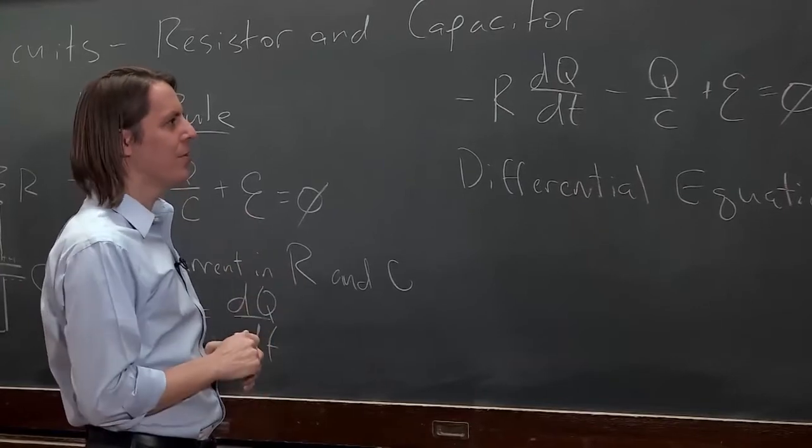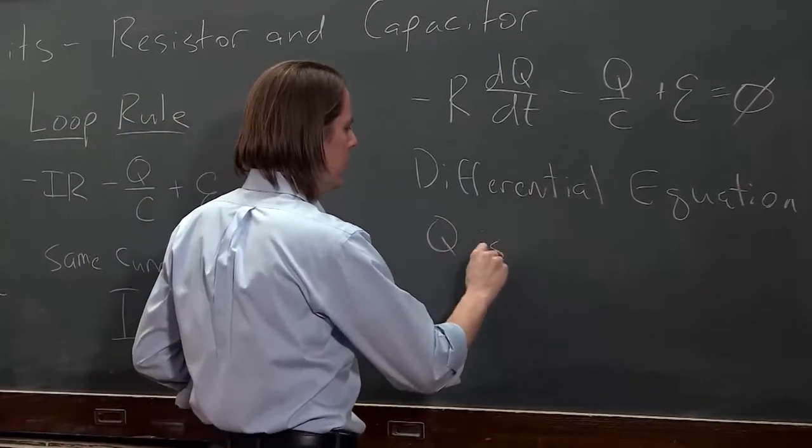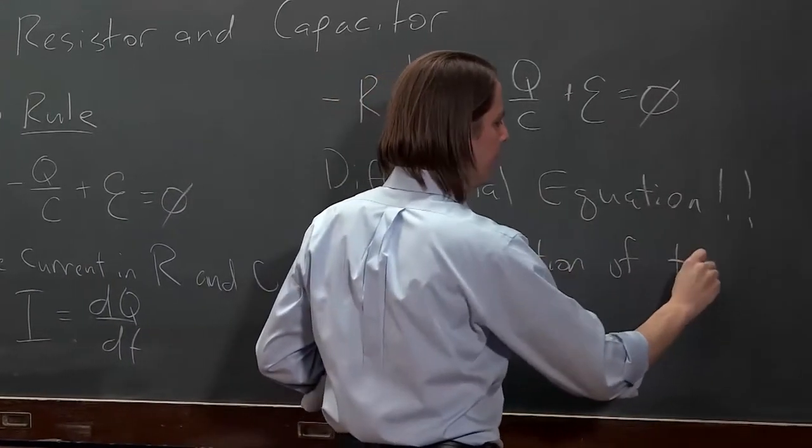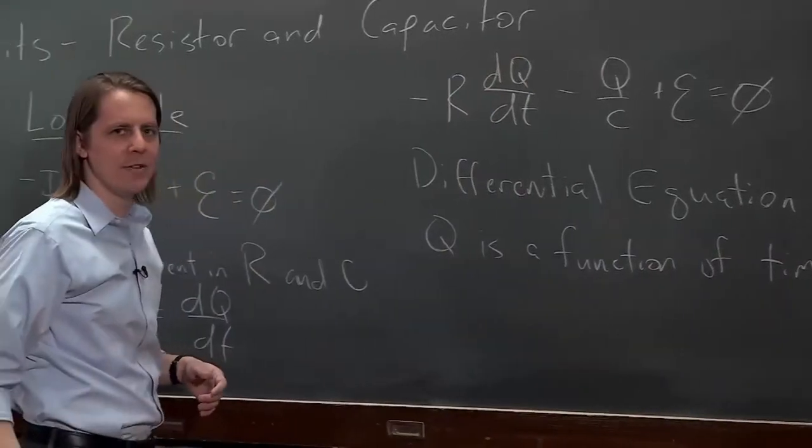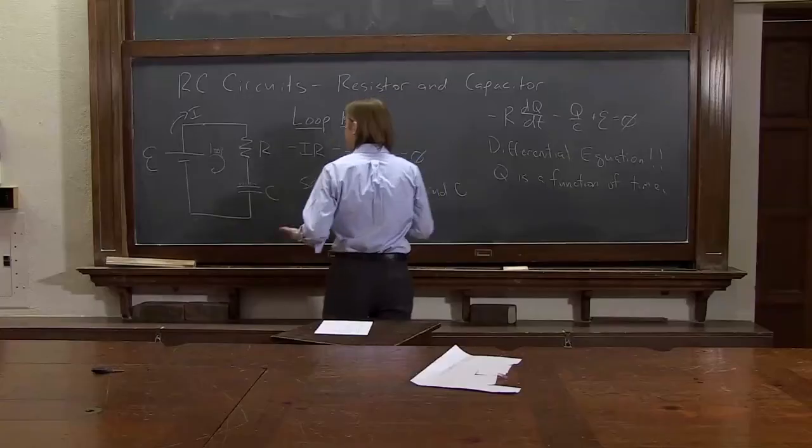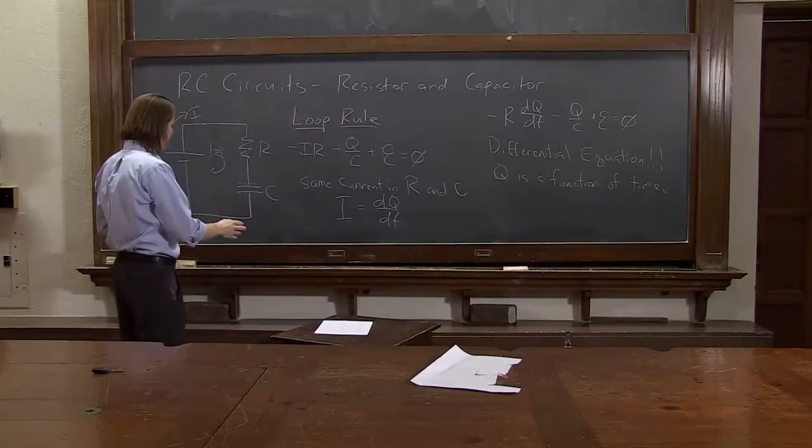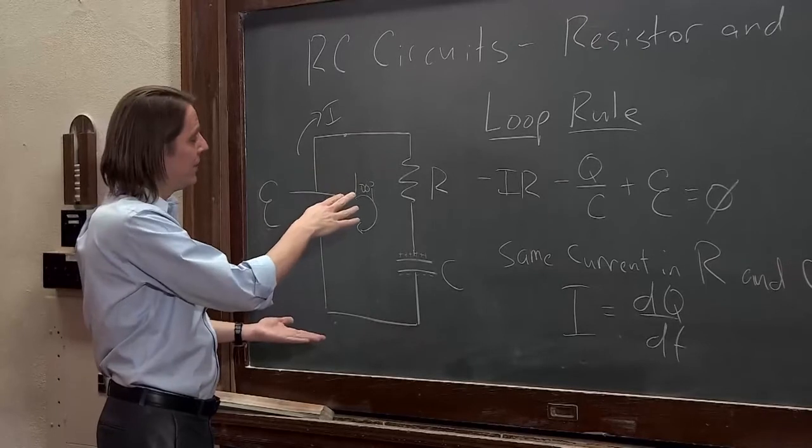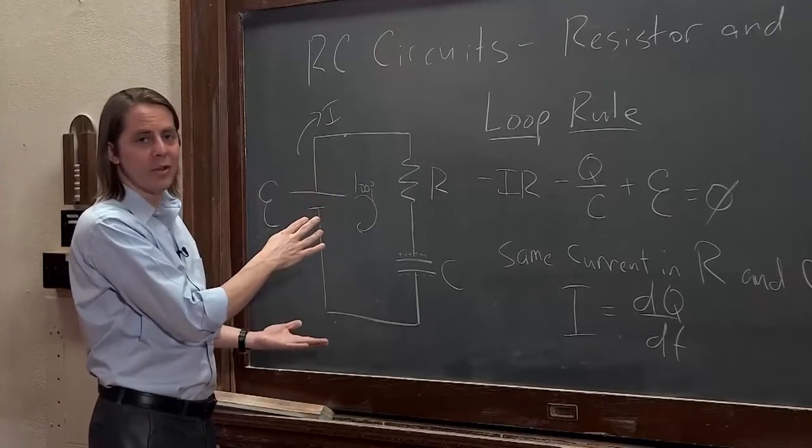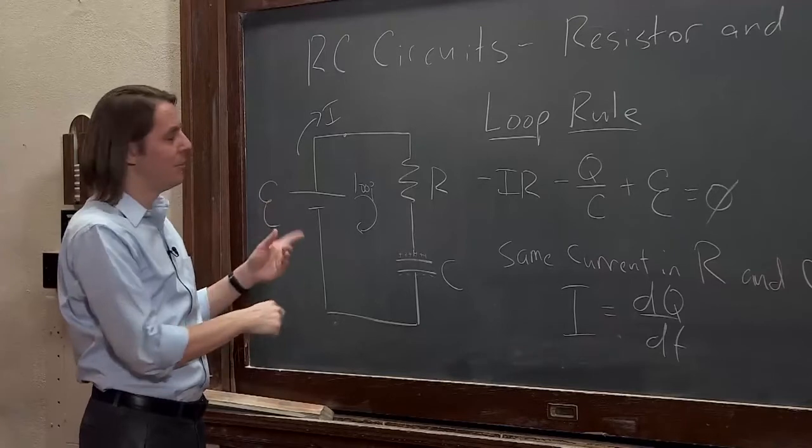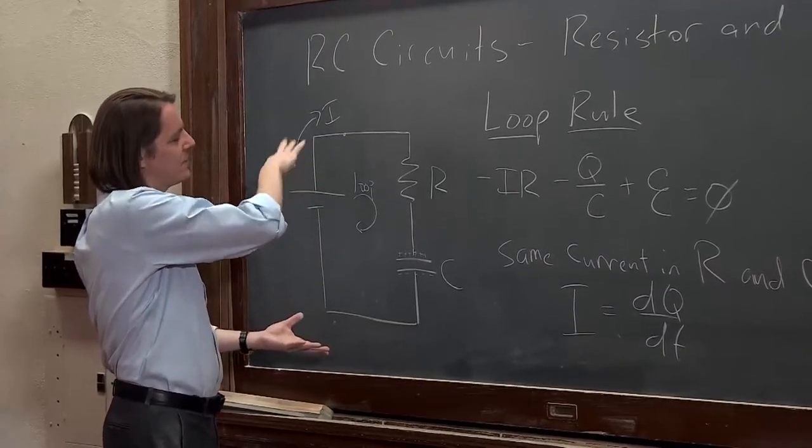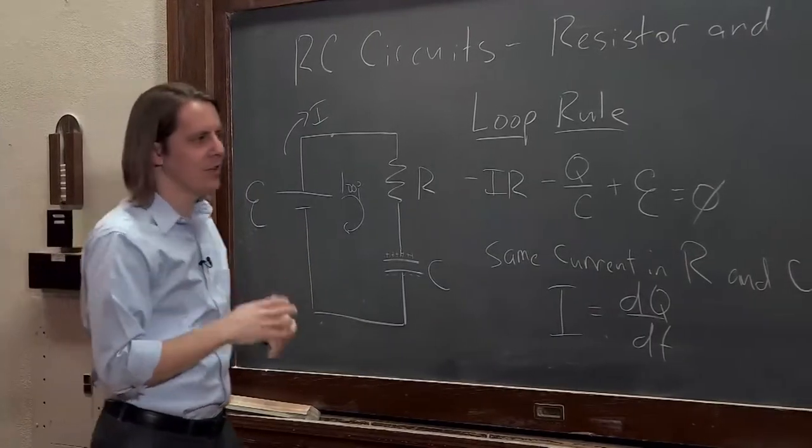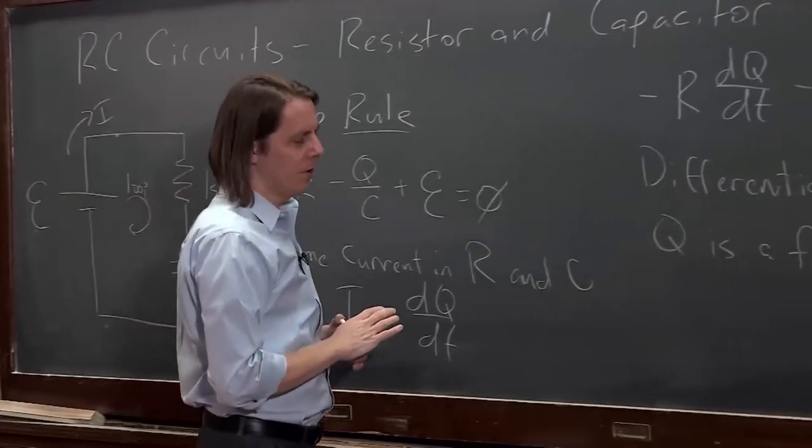But one thing before we get into this differential equation to realize is that q is a function of time. Your hint is there's a dq dt there. And what this means is this circuit doesn't just have a constant current flow. This is a circuit where the only solution to Kirchhoff's loop rule is for things to change in time. So this is a dynamic circuit. It's still a DC circuit. Because even though the current changes in time, it always goes one direction. So it's not really an AC circuit yet. But it's not sitting just with a constant current at all times.